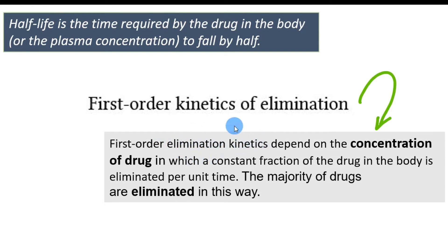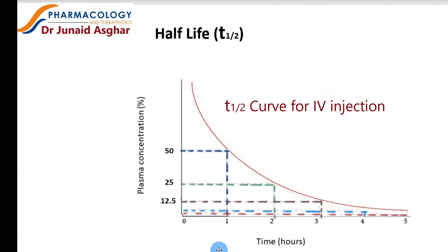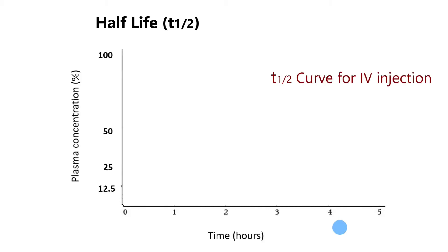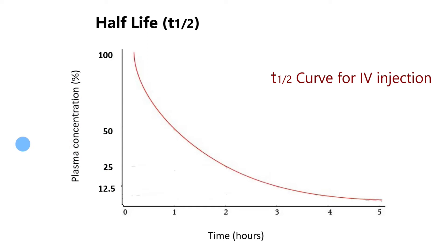Before discussing first-order elimination kinetics, let's look at the graph. On the x-axis there is time, and on the y-axis there is plasma concentration of the drug as a percentage. The x-axis shows hours: zero, one, two, three, four, and five. The y-axis shows plasma concentration, and this is our half-life curve. Let me also re-introduce the term bioavailability.